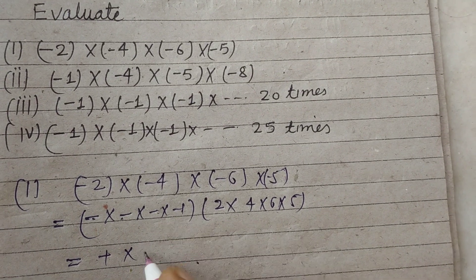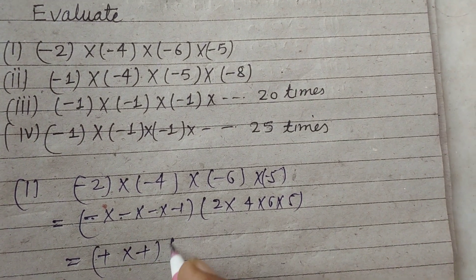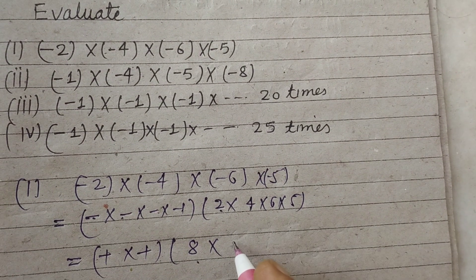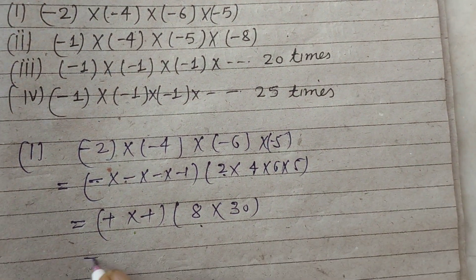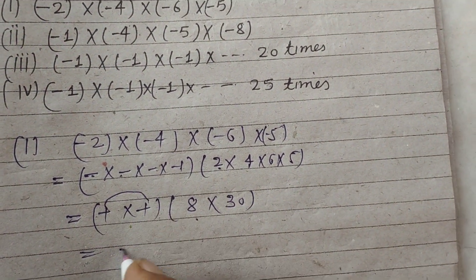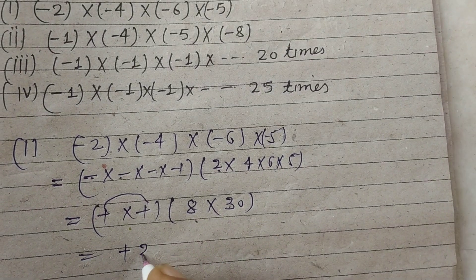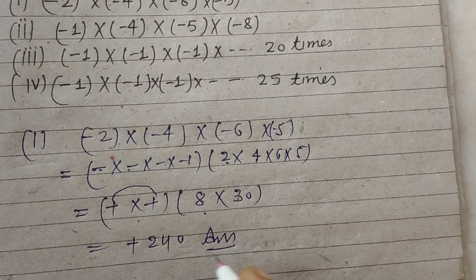Minus into minus is plus. 2 times 4 is 8, 6 times 5 is 30. Plus into plus is plus. 8 times 30 is 240. So plus 240 is the answer.